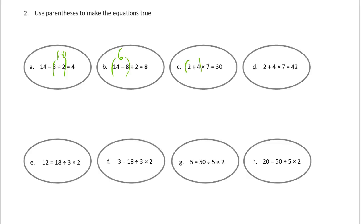Let's try the 2 plus 4. 2 plus 4 is 6. And 6 times 7 is not 30. It's 42. So it's got to go, has to go around the other two numbers. 4 times 7. 4 times 7 is 28. 2 plus 28 is 30. So that's where it goes.